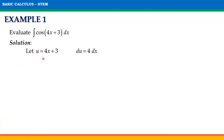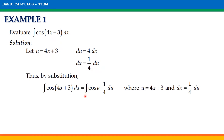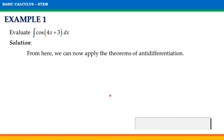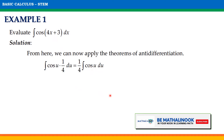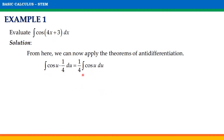Let u be equal to 4x plus 3, and the derivative of u, which is du, is equal to 4 dx, since the derivative of 4x plus 3 is 4 dx. Since we have dx, we need to divide both sides by 4 to solve for dx. Thus, dx is equal to one-fourth du. We will substitute one-fourth du for dx and u for 4x plus 3. Thus, our given becomes the antiderivative of cosine u times one-fourth du. From here, we can now apply the theorems of anti-differentiation.